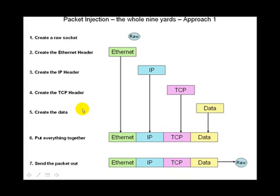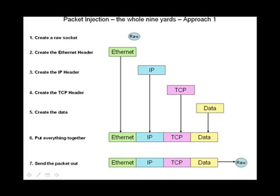Once all these individual headers and data have been created, we put all of them together: the Ethernet header, then the IP header, then the TCP header, and then the data. This is the sequence in which a packet is formed. After this is done, we send out the packet through the raw socket we created. So summarizing approach one: create the raw socket, create each header separately in memory — Ethernet, IP, TCP, and data (or UDP) — concatenate them in order, and then send the packet out onto the network.